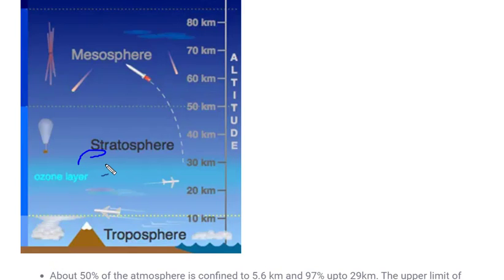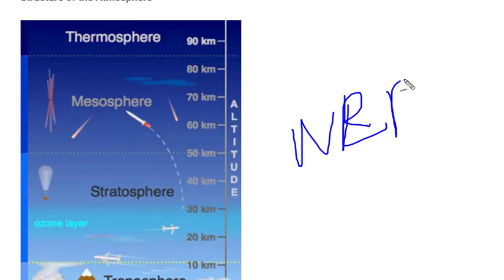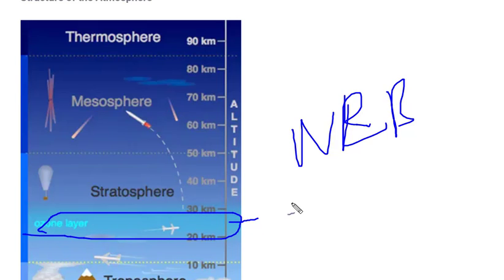Unlike the troposphere where temperature decreases as you move upward, in the stratosphere the temperature increases as you move upward. This is because the ozone layer absorbs most of the heat and energy coming from sunlight, heating the upper layer of the stratosphere. That's why temperature increases rather than decreasing in the stratosphere.